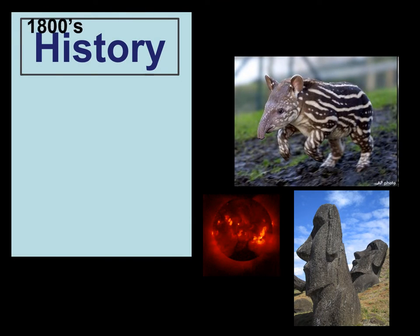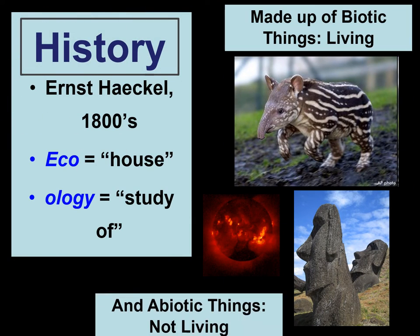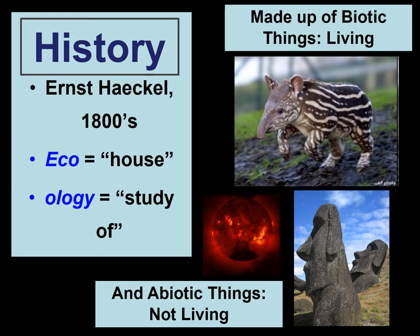When ecologists go into an area, they do notice a lot of interactions. They make careful observations about biotic factors that exist in the area — things that are living, such as animals and plants and fungi. But then they also make observations about the abiotic things that exist in the area, the things that are not living, such as water movement, air patterns, and even soil or dirt.